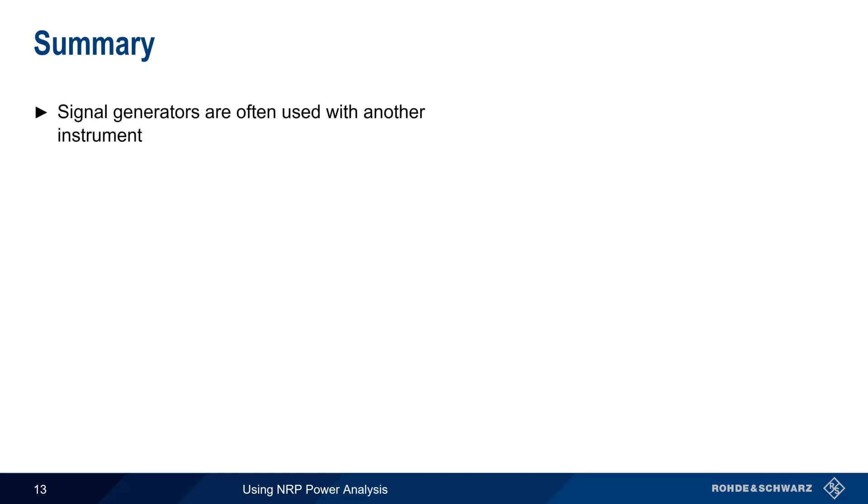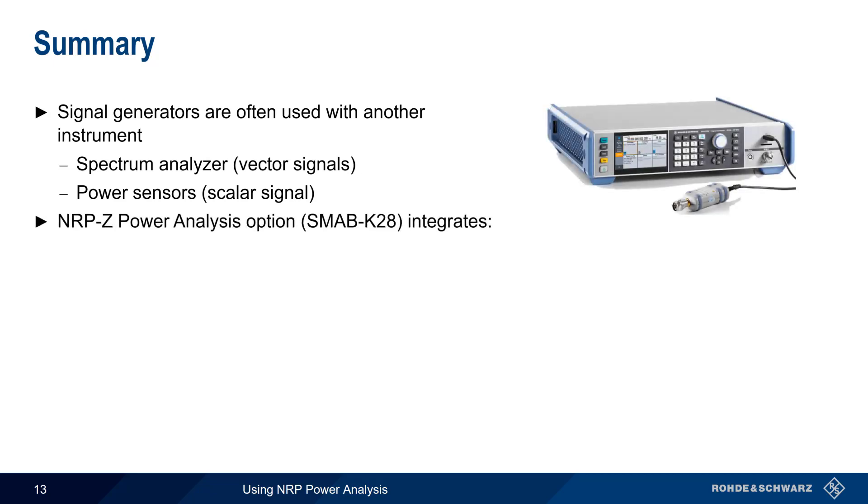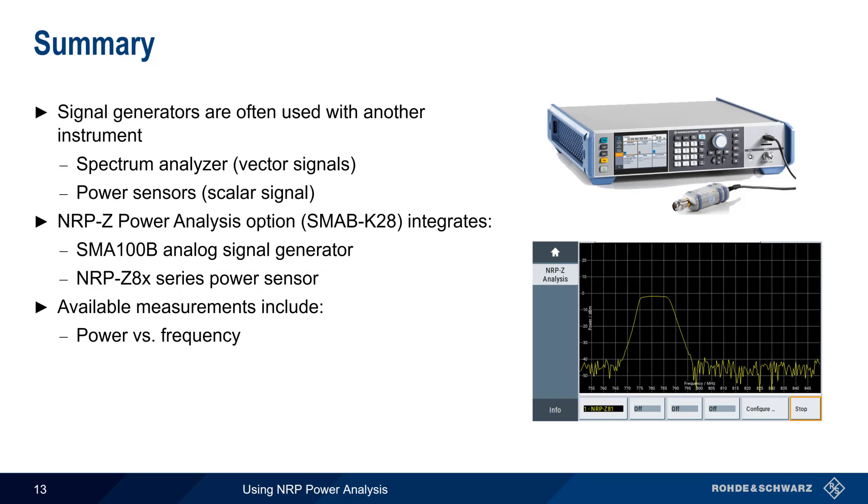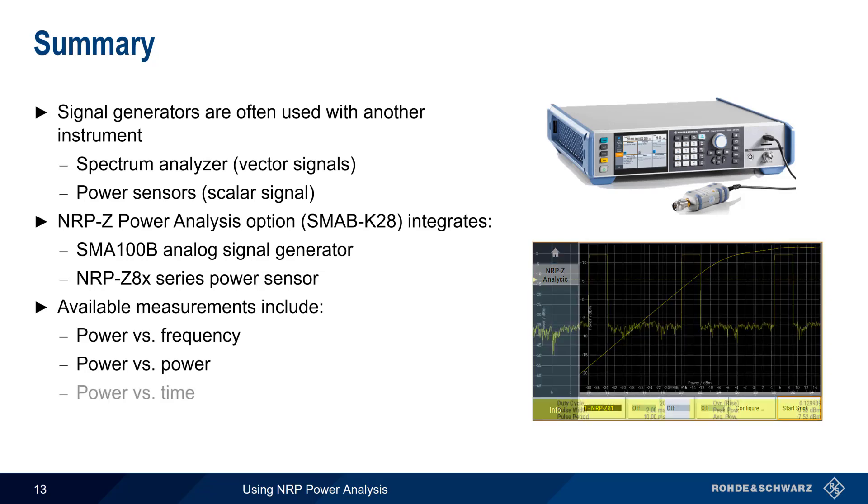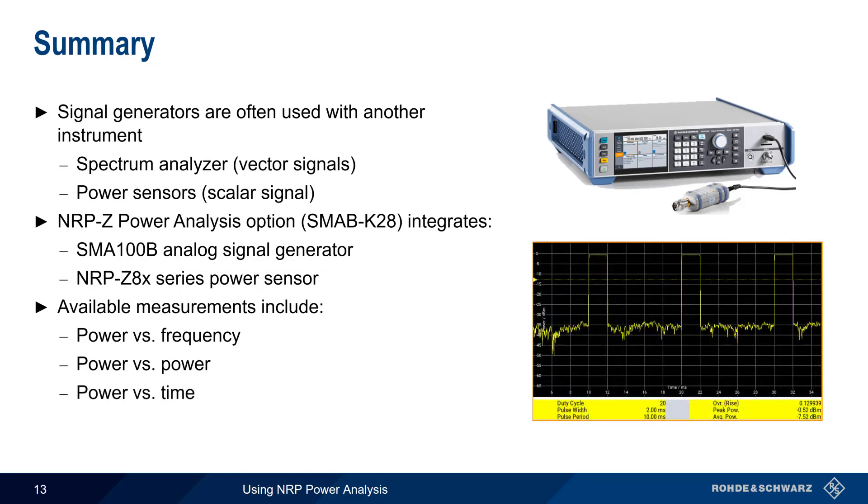So in summary, signal generators are often used with another instrument that measures how a device under test changes a signal. Spectrum analyzers are needed for the measurement of vector signals, such as LTE, 5GNR, or Wi-Fi, whereas power sensors can be used for scalar measurements of received power. The NRP-Z Power Analysis option integrates an SMA100B analog signal generator and NRP-Z8X series power sensors into an efficient, low-cost way of making scalar measurements. These measurements include power versus frequency, such as measuring a filter's passband, power versus power, such as measuring an amplifier's gain and compression point, and power versus time, such as measuring the parameters of a pulse signal.